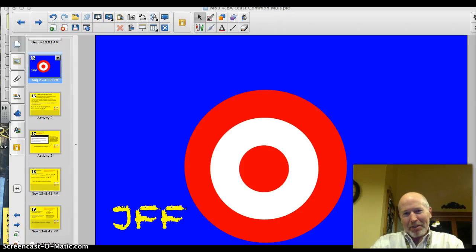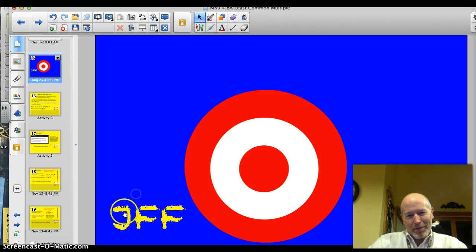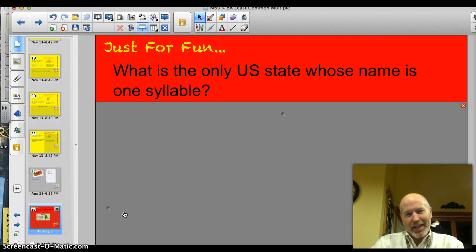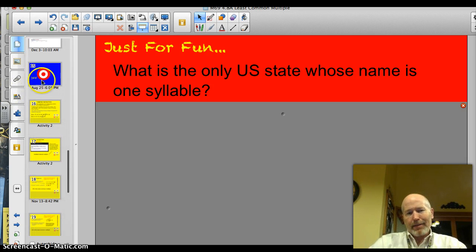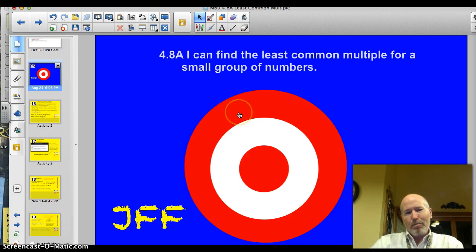Hey Valley Middle, welcome back to another lesson. Today we're going to explore the world of the least common multiple. It's going to be an exciting adventure. Sorry, my kids are giving me a hard time because I keep restarting here tonight. Alright, let's start off with something fun here. Our trivia question for tonight is something you all should be able to get. I have to throw in an easy one once in a while. What's the only U.S. state whose name is one syllable? You think on that. Here we go. Tonight, officially, the target is 4.8a. I can find the least common multiple for a small group of numbers. Let's do this thing.